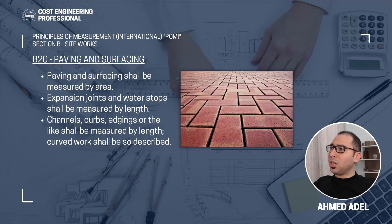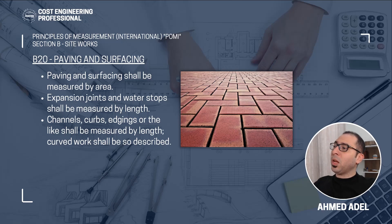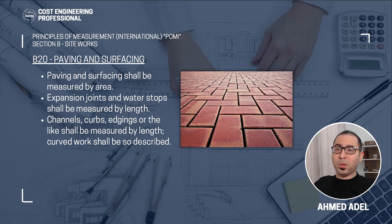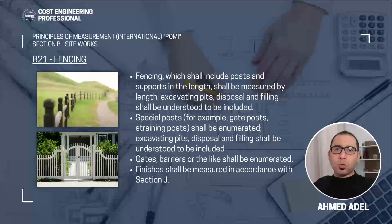Moving to subsection B20, paving and surfacing. Paving and surfacing shall be measured by area. Expansion joints and water stops shall be measured by length. Channels, curbs, edgings, or the like shall also be measured by length, and curved work shall be so described — because whoever is pricing the BOQ needs to understand it is curved, as it may cost more than straight linear work.